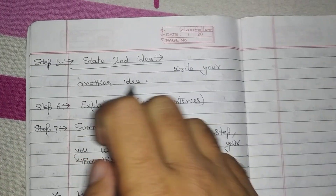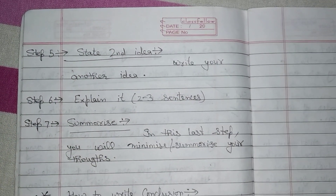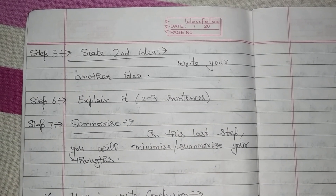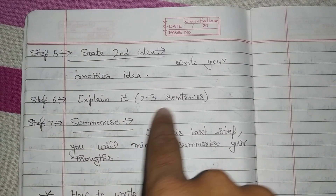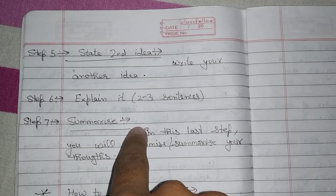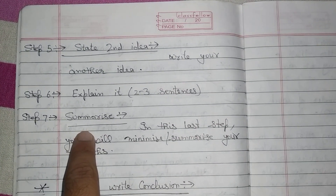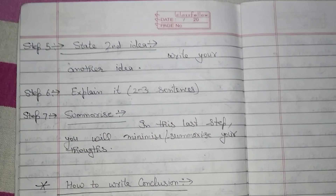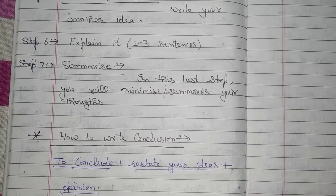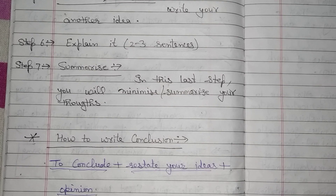Step five is to state your second idea — after elaborating your first idea, move to your second idea and elaborate it as well. If you have not given an example for the first idea, you can give the example after the second idea. The last step of the body paragraph is to summarize — for example: 'That is why these are the disadvantages of the mobile phone.'